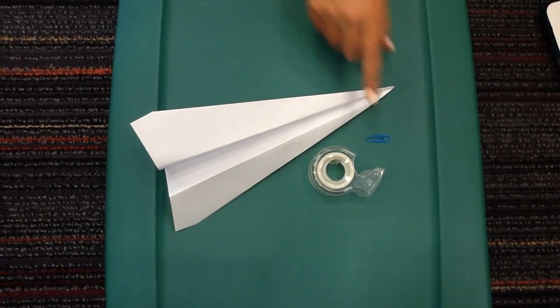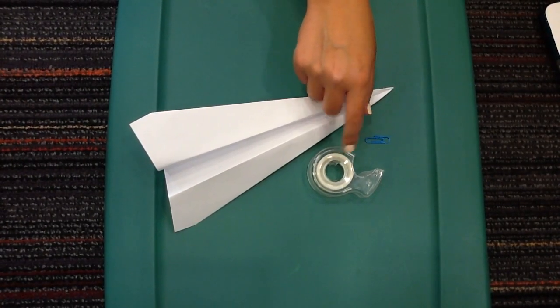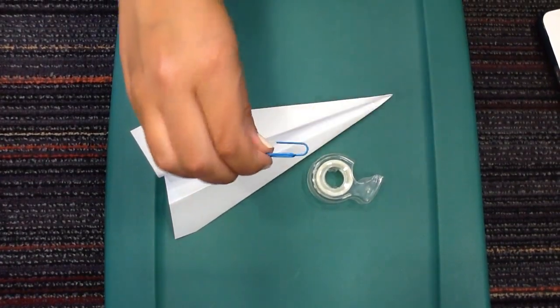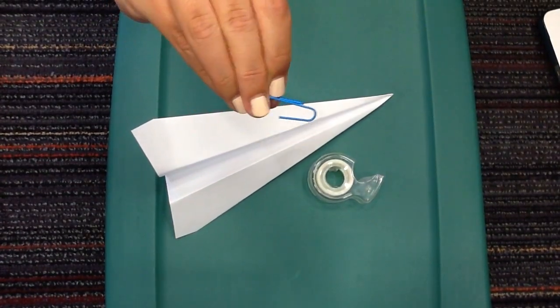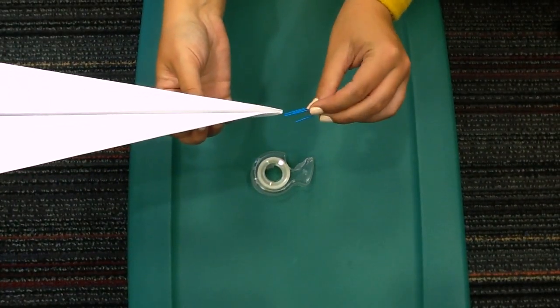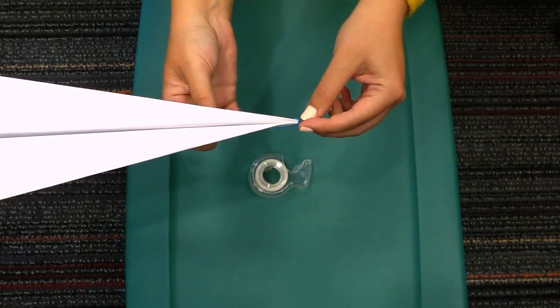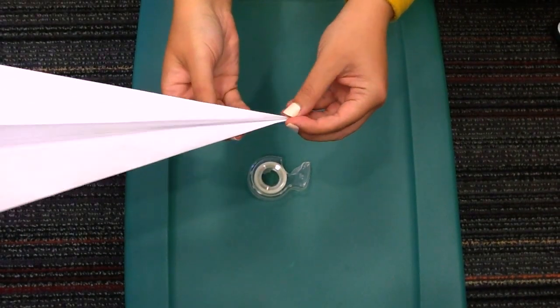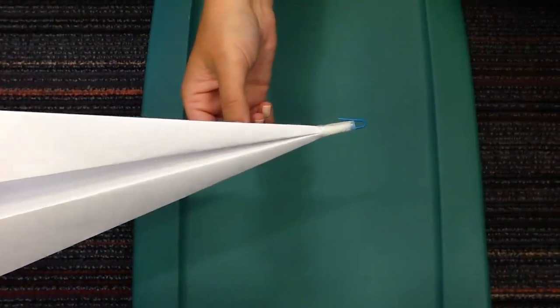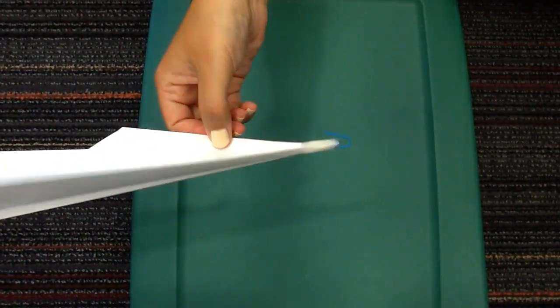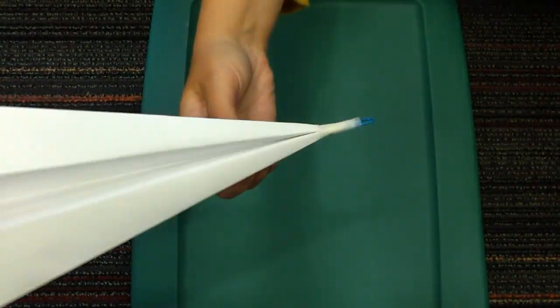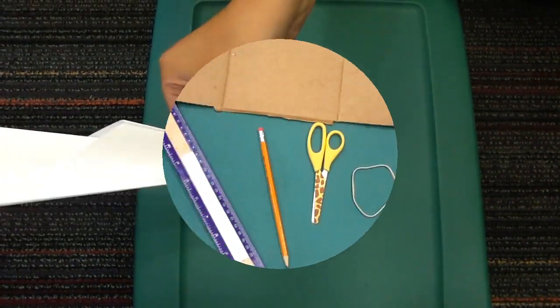Now, take a paper clip and a piece of tape. Bend the paper clip like this. Tape the paper clip to the nose of the airplane securely. Now, my paper clip is taped securely. Perfect, now it is time to engineer our launcher.